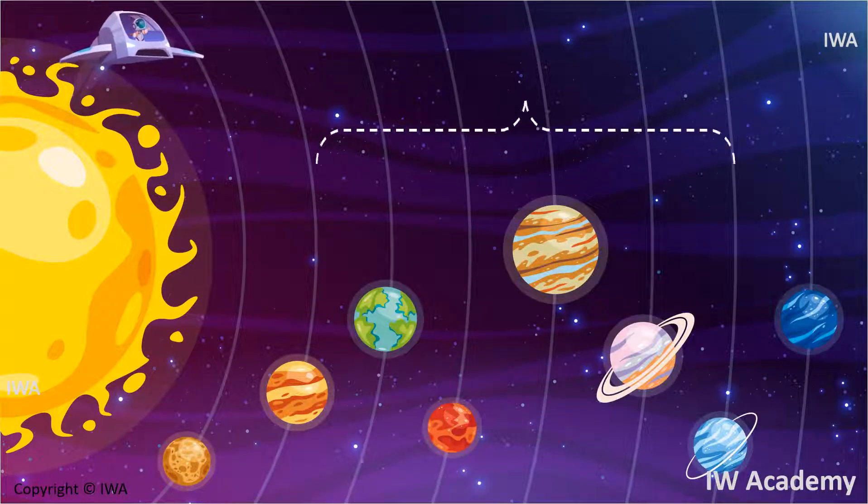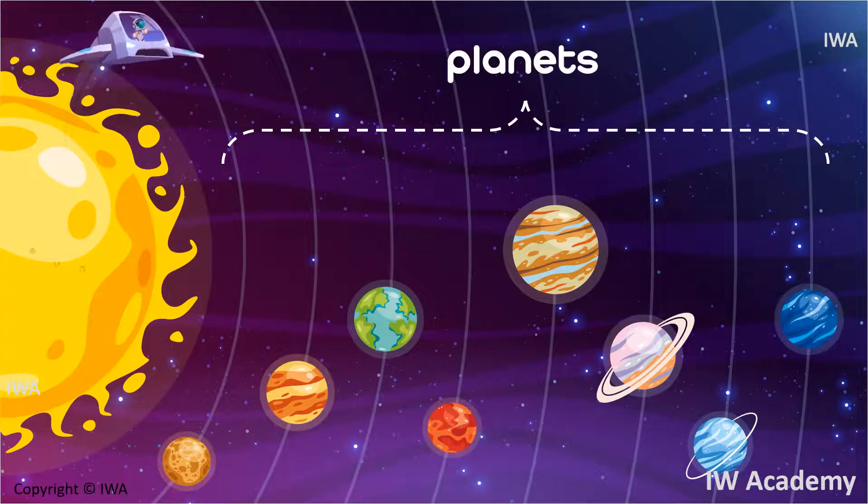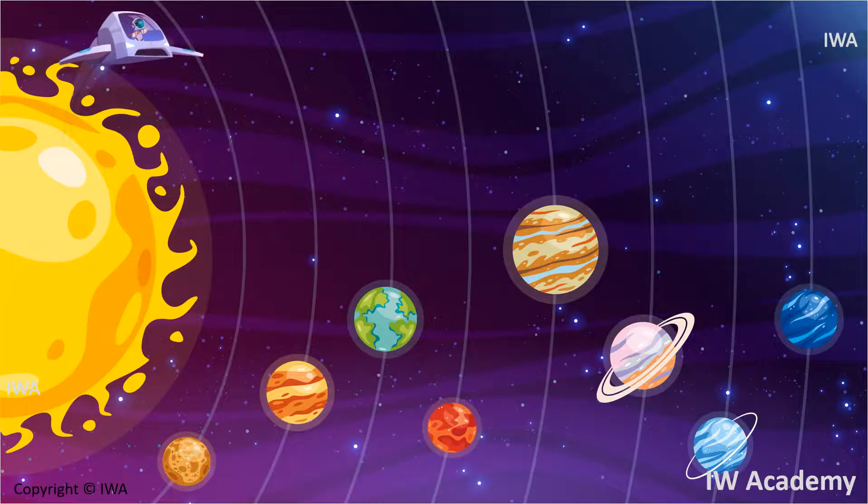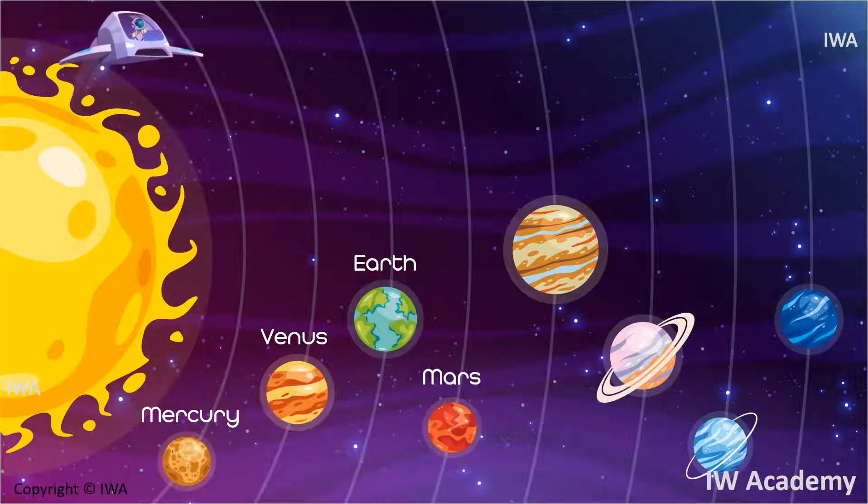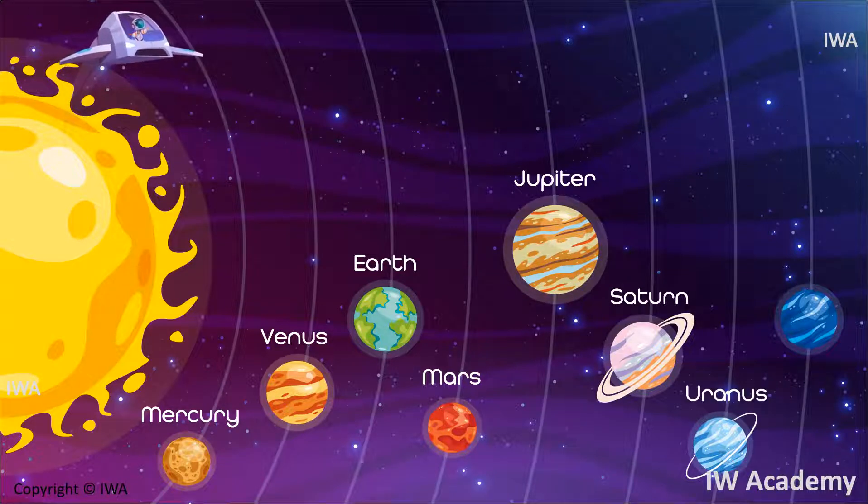There are eight planets around the sun. The planets are Mercury, Venus, Earth, Mars, Jupiter, Saturn, Uranus, and Neptune.